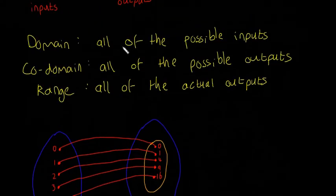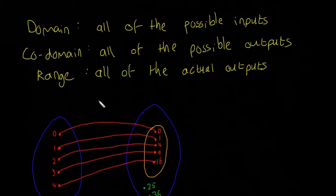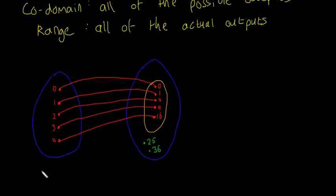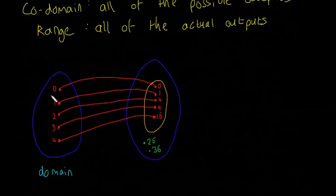So if we look up here at the domain, it says all of the possible inputs. So this one here on the left is called the domain. And it's not that 0, 1, 2, 3, and 4 are the only possible inputs. There's loads, loads more. So all the space in here is all the numbers.